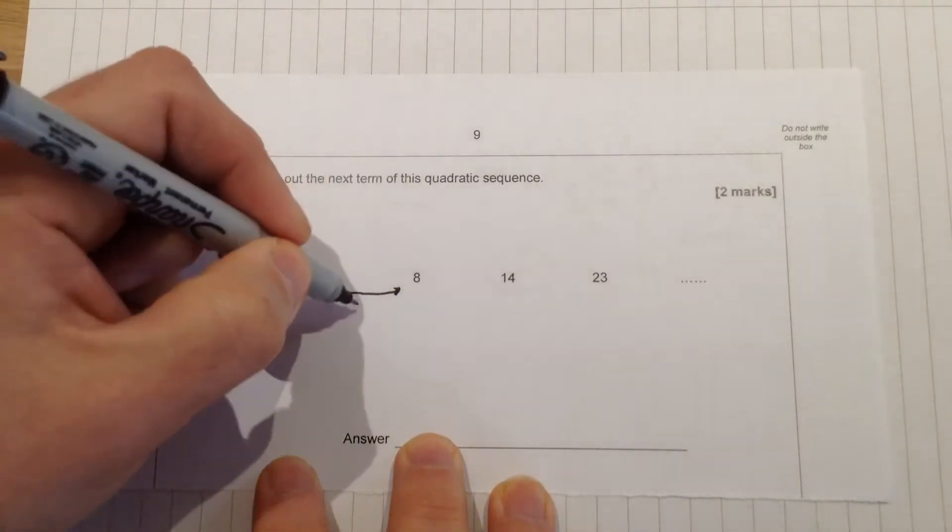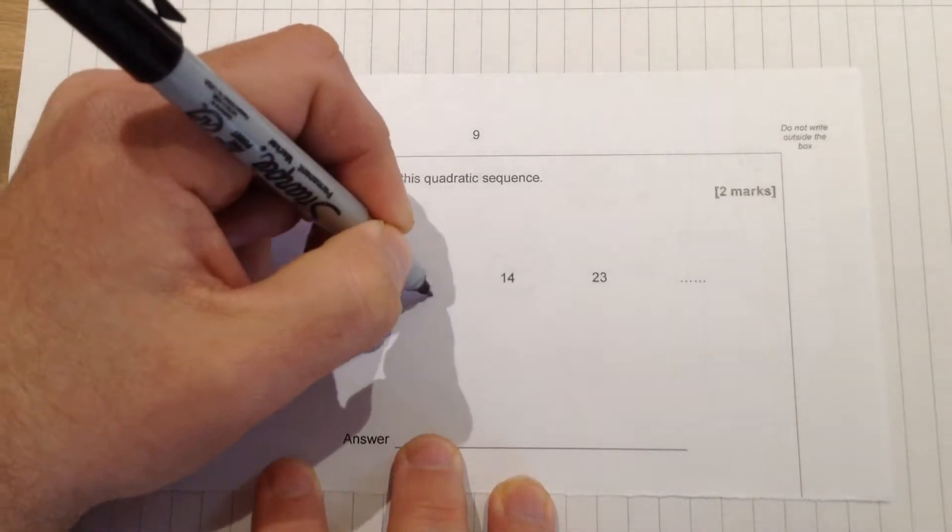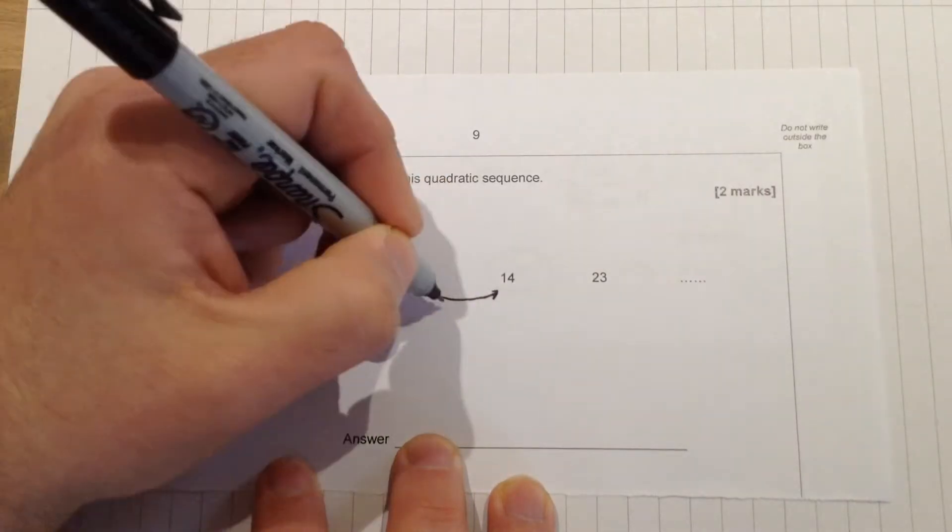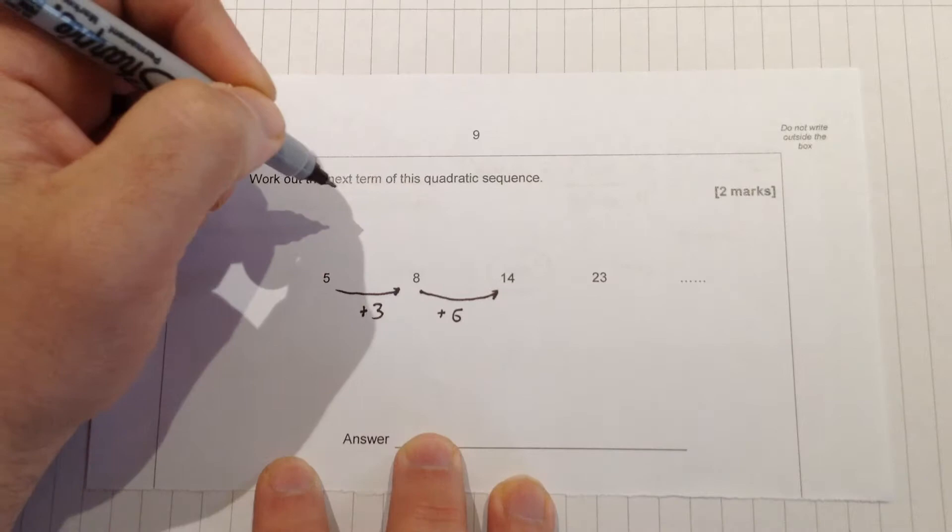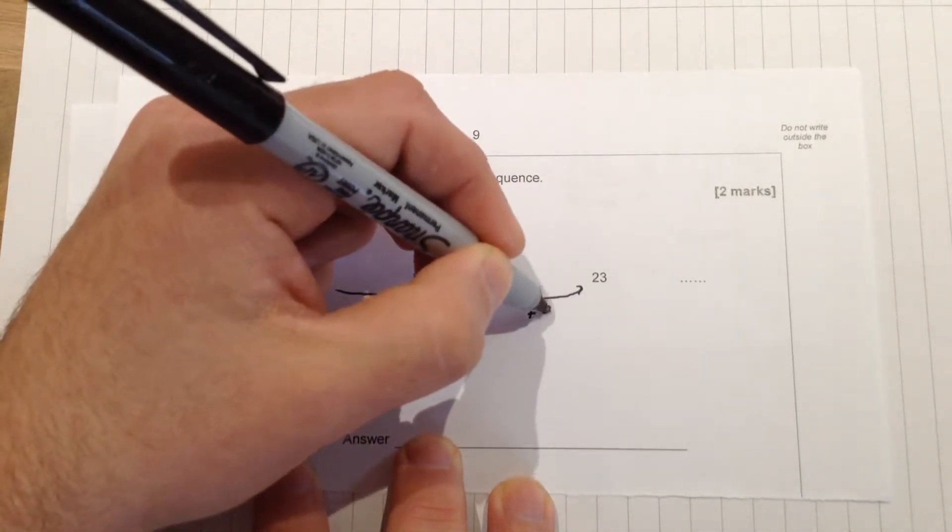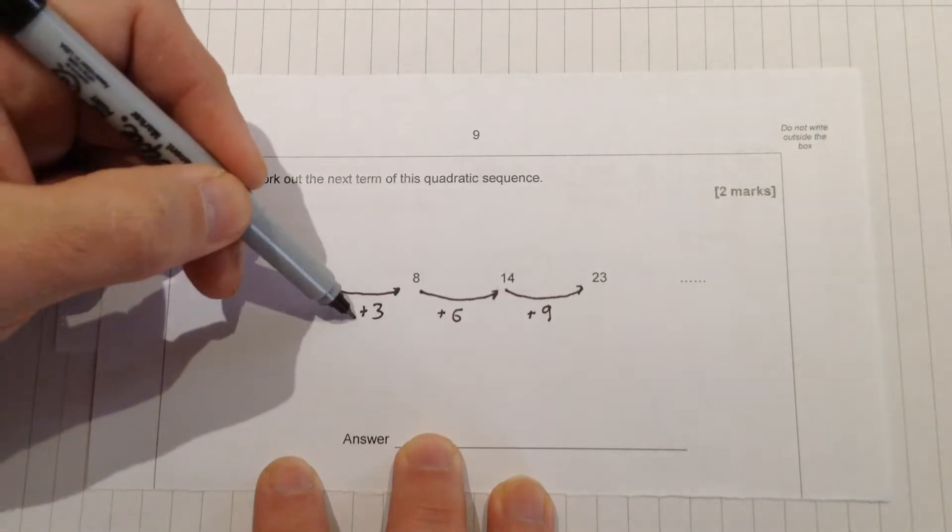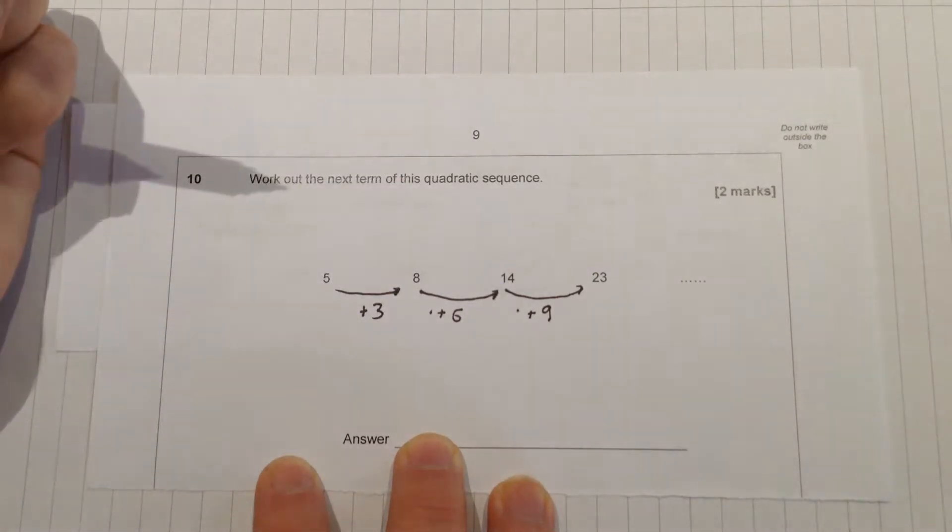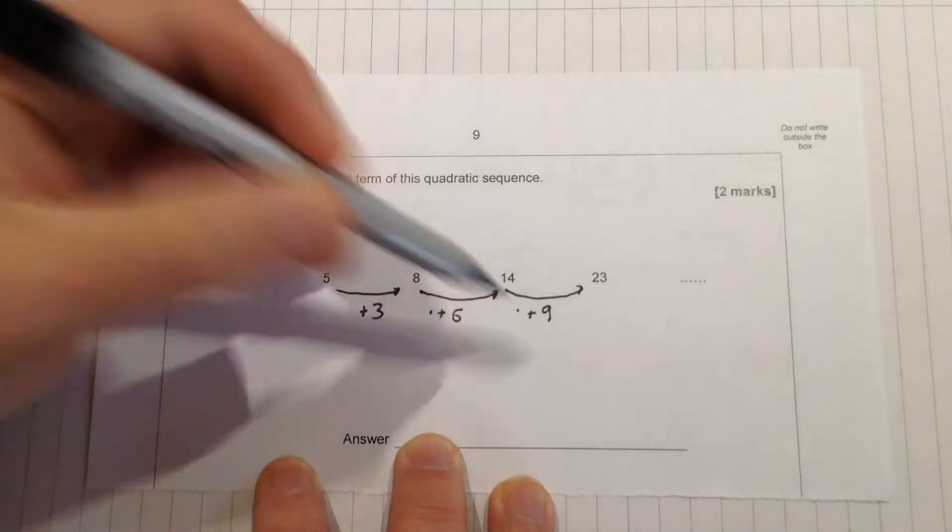Well to get from 5 to 8 we've added on 3. From 8 to 14 that's add 6, and from 14 to 23 that's add 9. Now if you notice, the thing that we're adding on each time is going up by 3. So 3, 6, 9.